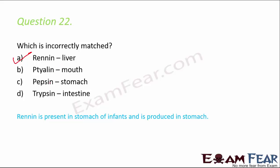Tylin is nothing but salivary amylase. Pepsin is secreted by the gastric glands in the stomach, and trypsin is in the intestine, secreted by the pancreas. Pepsin and trypsin help in digestion of proteins, and tylin helps in digestion of carbohydrates.